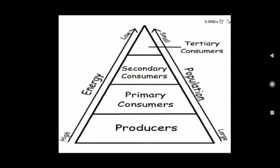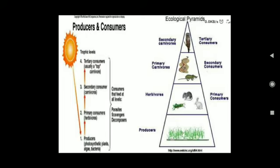In this diagram you can see the energy flow. At the base of the pyramid there are producers; above the producers are primary consumers; above them are secondary consumers; and above all are tertiary consumers. You can also see that the 10 percent law is applicable to the transfer of energy.